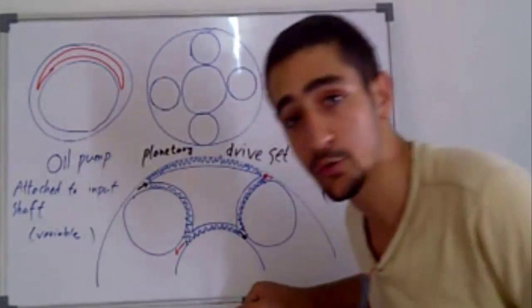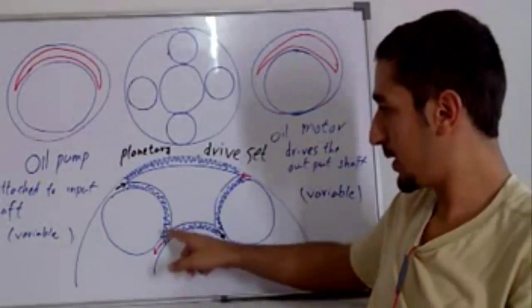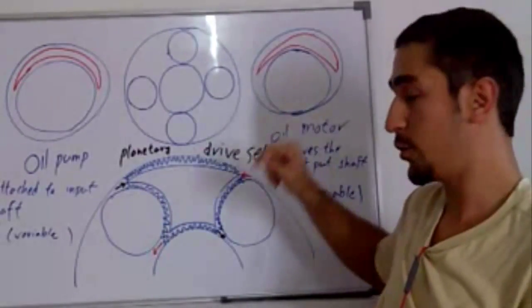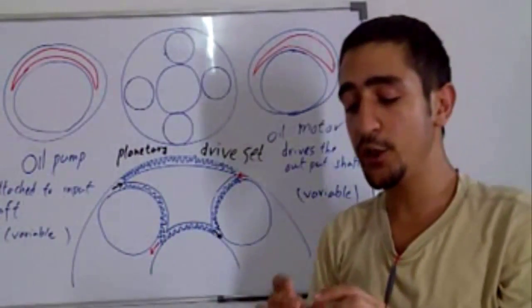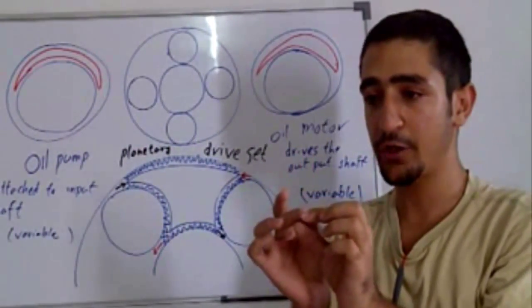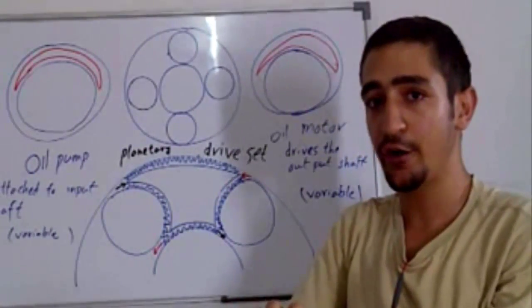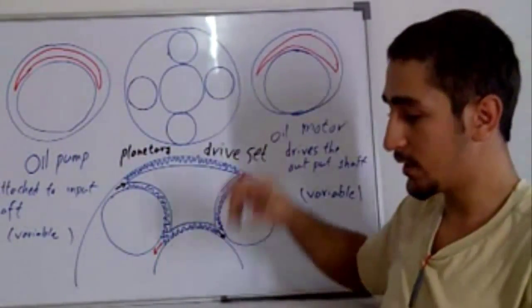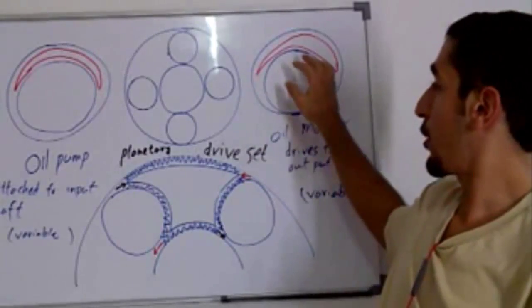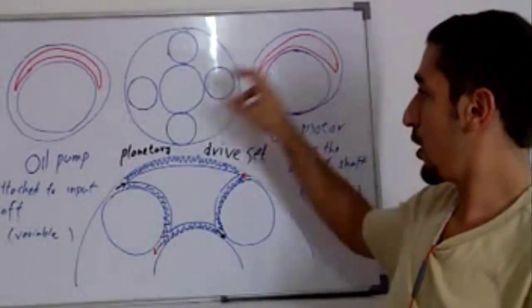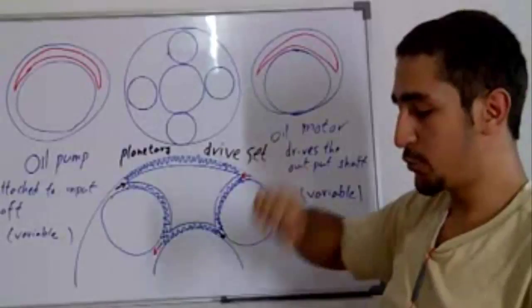How are we going to do that efficiently? In order to limit the flow, we have to use an oil motor. Because if we simply use a high pressure valve or limit the pressure, we are going to waste the energy. Instead of wasting energy, we are going to use an oil motor to drive the output shaft.